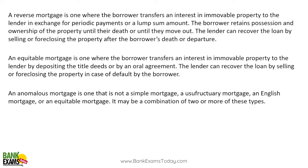Reverse mortgage: for example, a 65–70 year old person has a house but needs monthly payments. He does a reverse mortgage — the bank gives him periodic payments. After his death, the legal heirs have to repay the bank's loan if they want to keep the property. The borrower transfers interest in the immovable property to the lender in exchange for periodic or lump sum payments, and retains possession and ownership until death or moving out. Equitable mortgage is one where the borrower transfers an interest in immovable property to the lender by depositing the title deed or by oral agreement.